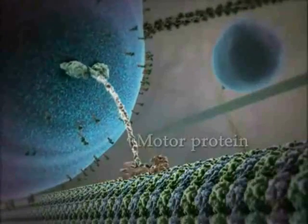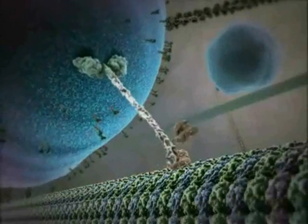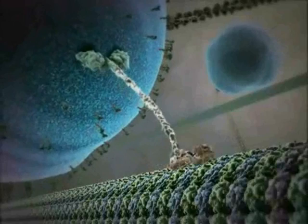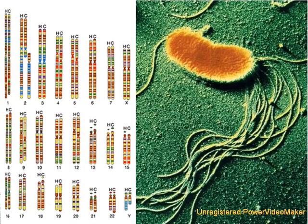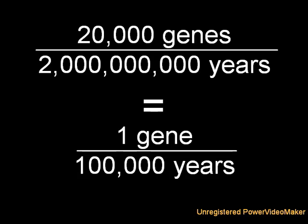But where did this diverse array of proteins, and in turn genes, come from? The human genome contains some 25,000 genes, but bacteria only contain between 1,000 and 6,000 genes. If the theory of evolution is correct, and humans share a common ancestor with bacteria, then over the past 2 billion years we must have gained at least some 20,000 genes. If you do the math, that's only one new gene every 100,000 years.